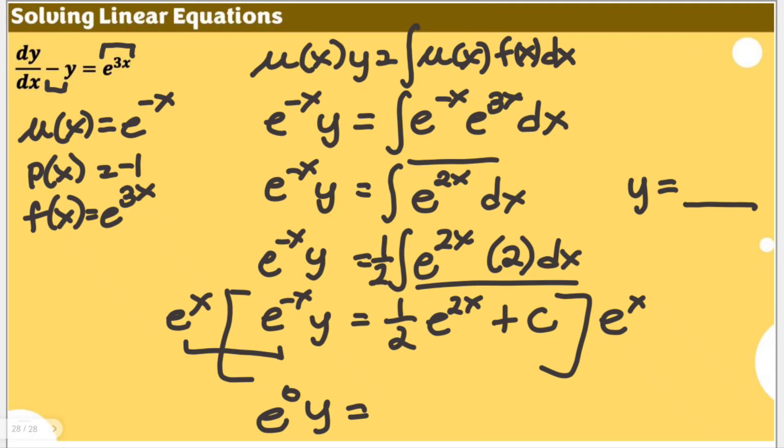So we will have an expression here which is equal to 1 half times, you will have e to the power of 3x. And then plus c e to the power of x. As we multiply all terms by that.